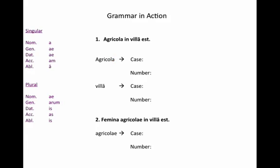Now that we've seen all of our endings, let's put them into use. Here we have two short sentences: 'agricola in villa est' and 'femina agricolae in villa est.' On the left we have all of our endings to help you — you do need to memorize these, but since we're just starting you can use that as a cheat sheet. Let's work with this first sentence, 'agricola in villa est.' Take a few minutes and try to tell me what case agricola is, and what case villa is. Feel free to pause if you need more time.